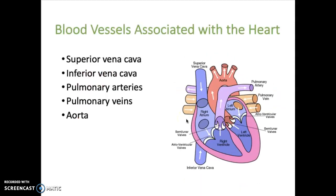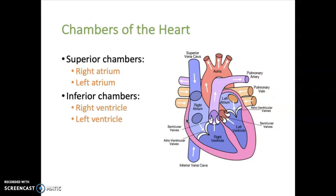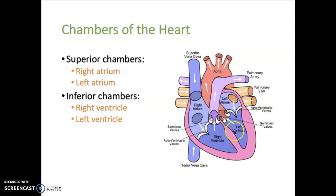The heart has four chambers. The two upper chambers are the atria — the right atrium on the right side and the left atrium on the left side. The inferior chambers are the pumping chambers of the heart, which contract strongly to eject blood out of the heart. The right ventricle pumps blood to the lungs, and the left ventricle pumps blood out to the entire body.